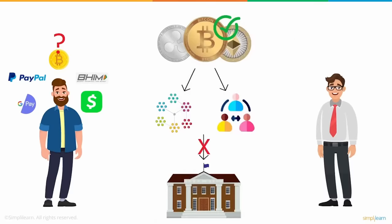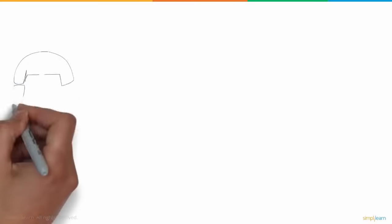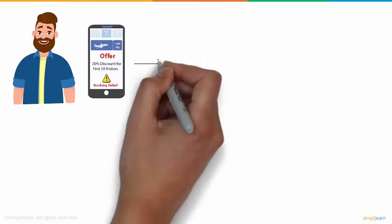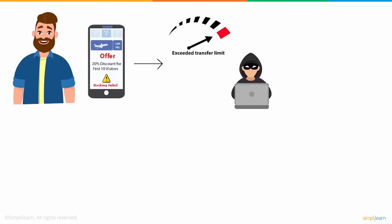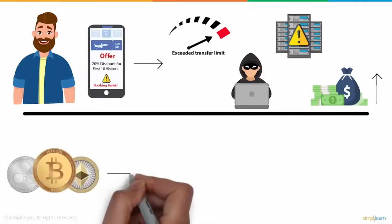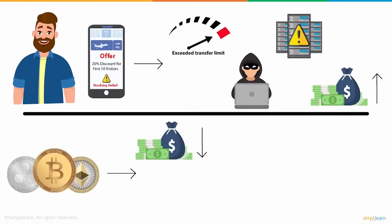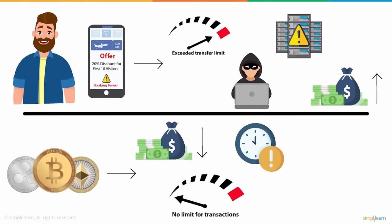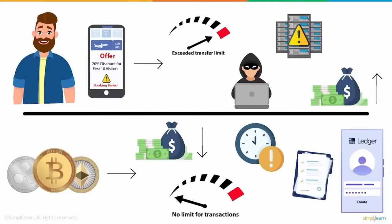Unlike other payment systems handled by banks or governments, cryptocurrency transactions never fail. Daniel's transaction could have failed due to exceeding a transfer limit, his account being hacked, technical issues with his bank server, or high transaction fees imposed by the bank. Cryptocurrency charges almost no or very low transaction cost, there is no limit for making transactions, you have 24/7 access to your money, no extra delay or charges on international transactions, and anyone can use it without paperwork — just create an account on a digital wallet.